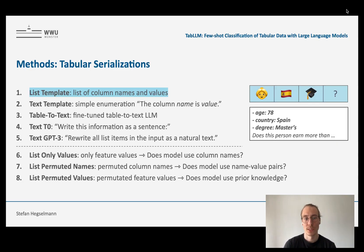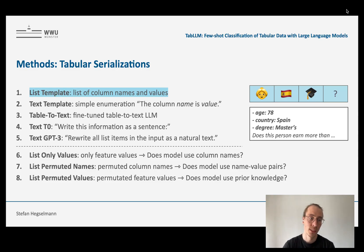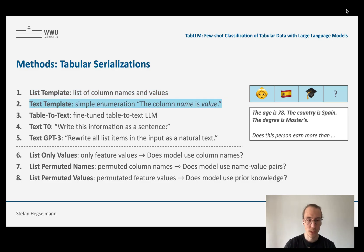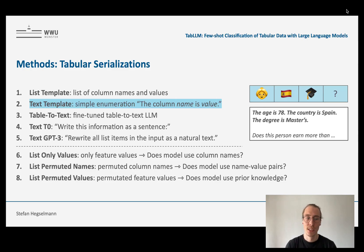We focused on studying different serializations, and here's the list. The first is the list template: simply a list of column names and values — age 78, country Spain, degree masters, then our prompt. That's also what a lot of papers using LLMs use as a default. The next one is slightly more complex, using the pattern 'the column name is a value' to get more fluent text — 'the age is 78, the country is Spain, the degree is masters.' The motivation is to get a serialization closer to the training distribution of the language model, hopefully yielding better prediction performance.